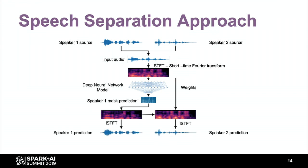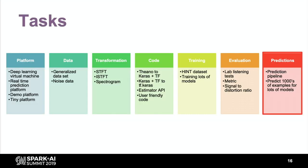To create a solution, there are a lot of typical deep learning tasks to go through: establishing a platform, getting a dataset, looking at transformations, coding the model and neural network, then training—I've trained hundreds of models—then evaluations, and finally predictions or inferences. I'll get into each of these tasks.